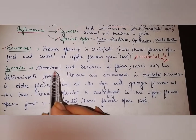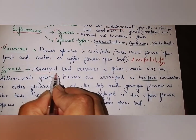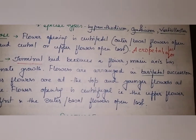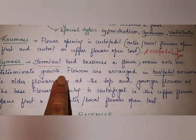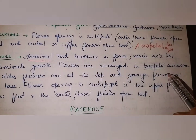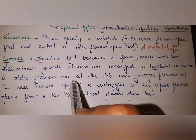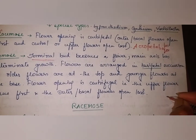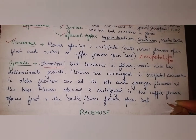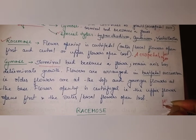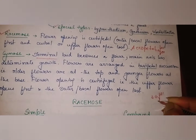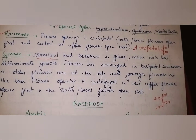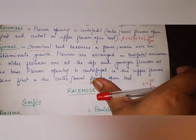In cymose inflorescence, the terminal bud becomes a flower and the main axis has determinate growth. Flowers are arranged in basipetal succession — older flowers are at the top and younger flowers are at the base, just the opposite of racimose. The flowers start to open from the top: this one is first, the second, the third, the fourth, and so on.